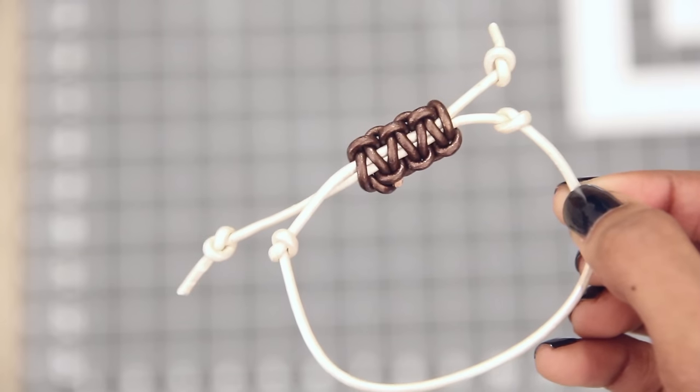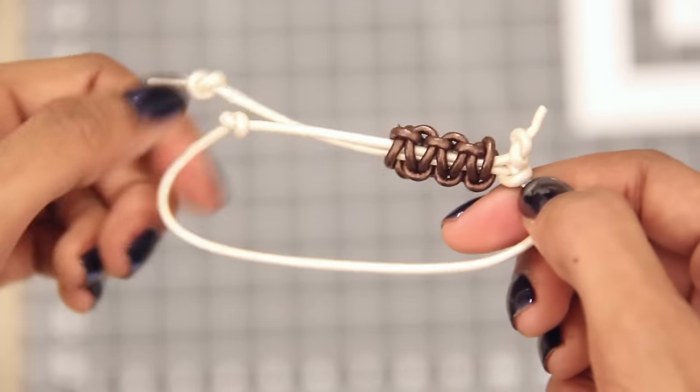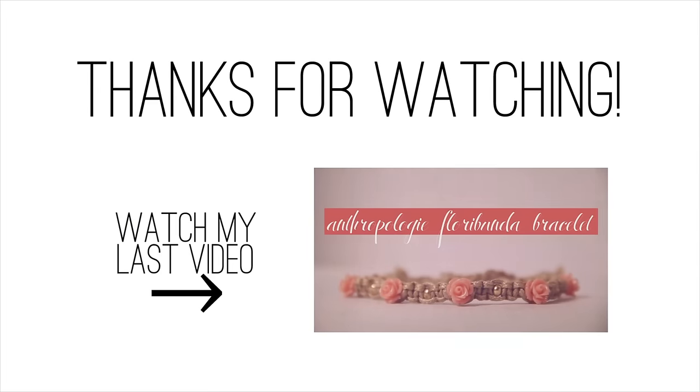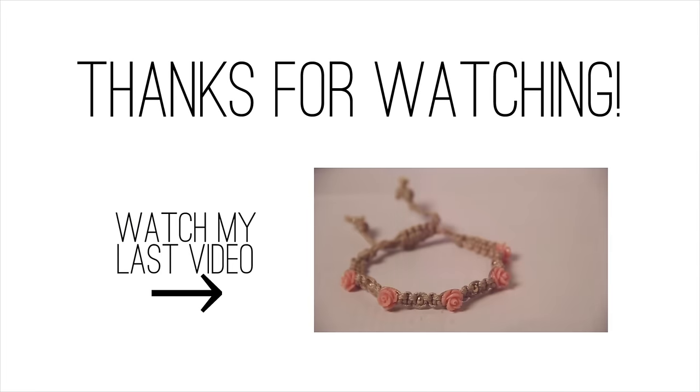And now you have a sliding closure. You can make your bracelet bigger or smaller by tugging on the ends. To see these square knots in action, you can click here for a full bracelet tutorial.